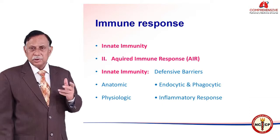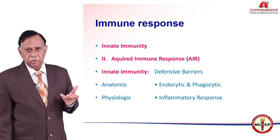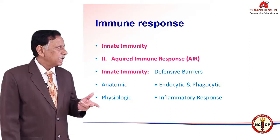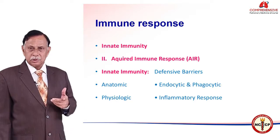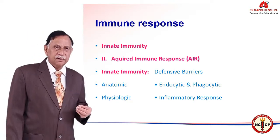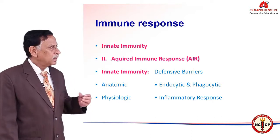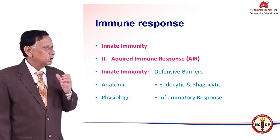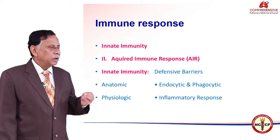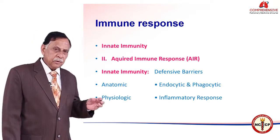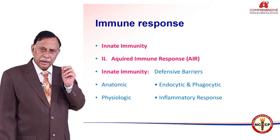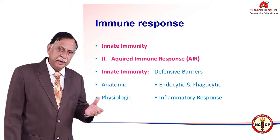What is immune response? There are two types of immunity. One is innate immunity and the second is acquired immune response. Innate immunity is present in the body itself right from the very beginning — we have certain defense barriers anatomically, endocytes, phagocytes, and right from the nasal cavity we have little hairs and other things that prevent entry.